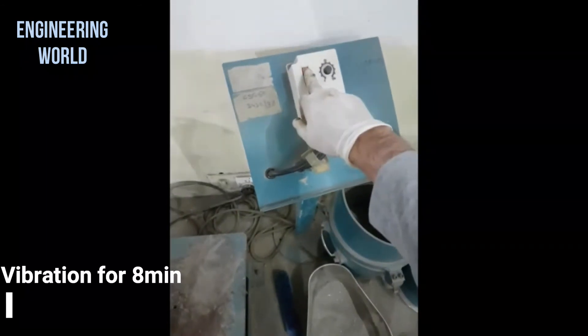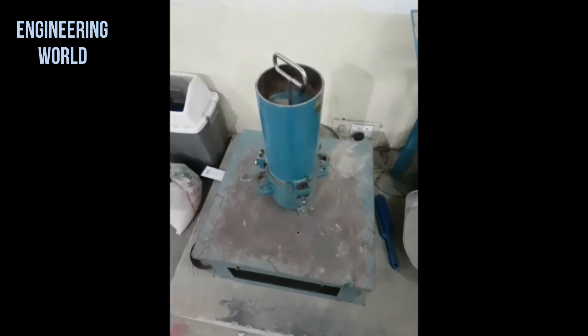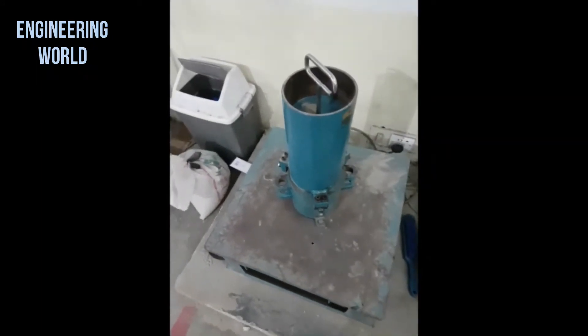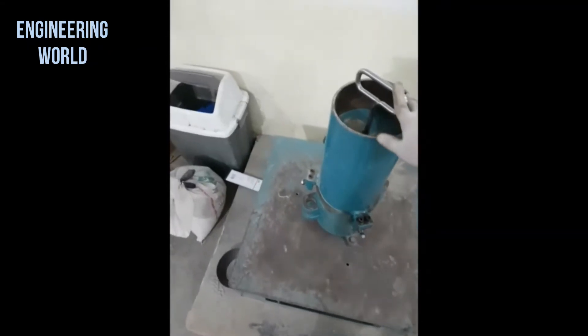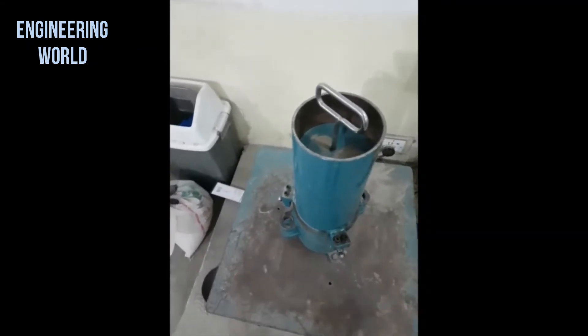Once 8 minutes have passed we will turn this vibrating table off. And now with the machine off we will remove the weight and clamp the guide sleeve and take it off.